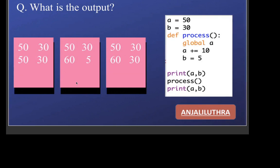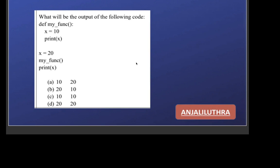Now you can see I have used the global keyword here. Using it will create another variable that is local to the process. When we come back, the outer variable — the 30 one — is still 30. So a changed to 60, but b is still 30. Your answer will be option c: first 50 and 30 were printed, then after the call, a has increased by 10 to become 60, but b remains the same. So 50-30 and 60-30 will be printed on screen.